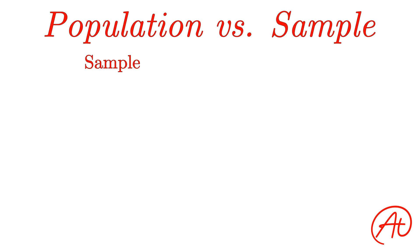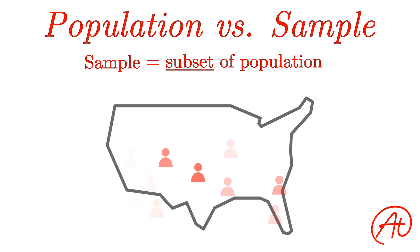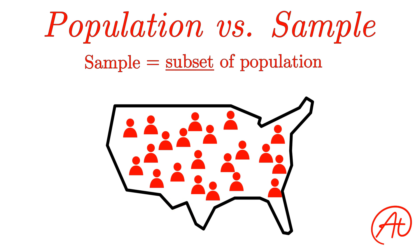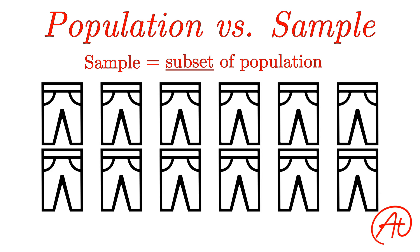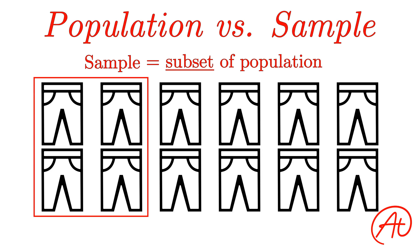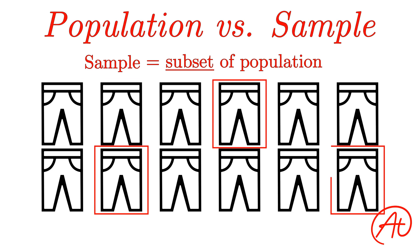Alright, now let's go over samples. A sample is just a smaller subset of that larger population. So for the example of citizens of a country, a sample may be picking a thousand people from a certain area like the east coast. Or it might be picking a hundred people from every state, province, or region. Or switching to the clothing company example, it might be taking every pair of pants made on Monday, or every fourth pair of pants made during the week. The important thing to understand is that a sample is a subset of a population.